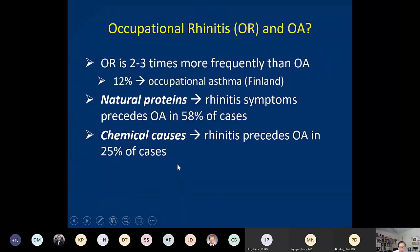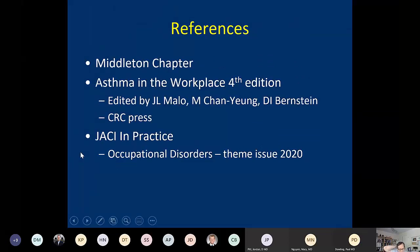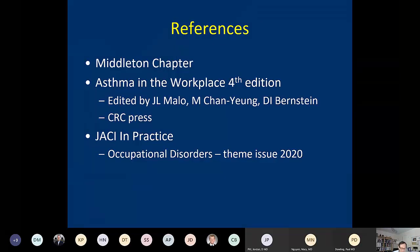Occupational rhinitis is two to three times more frequent than occupational asthma. About 12% of patients who develop occupational rhinitis will go on to develop occupational asthma. With natural protein sensitizers, occupational rhinitis precedes occupational asthma in 58% of cases; with chemical sensitizers, in about 25%. Recommended resources include the Middleton textbook chapter, the book Asthma in the Workplace (now in its fourth edition with a fifth in preparation), and an upcoming thematic issue of the Journal of Allergy and Clinical Immunology in Practice on occupational disorders.